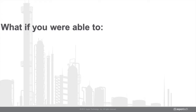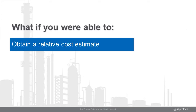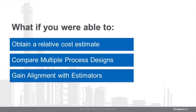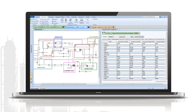What if you were able to obtain relative cost estimates, use them to compare multiple process designs, and then gain alignment with estimators by passing that information to them to further develop and increase estimate accuracy? The solution is Activated Economics in Aspen Plus. It brings industry-leading cost estimation software — the same software used by estimators — into the simulator.